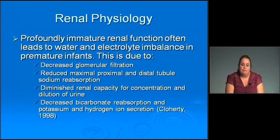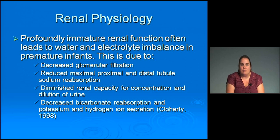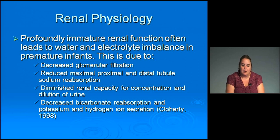Profoundly immature renal function often leads to water and electrolyte imbalance in premature infants. Because of their inability to dilute urine, they don't have good glomerular filtration, and have reduced maximal proximal and distal tubular sodium reabsorption, decreased bicarbonate reabsorption, and decreased potassium and hydrogen ion secretions — demonstrating definitely immature renal function in non-term babies.